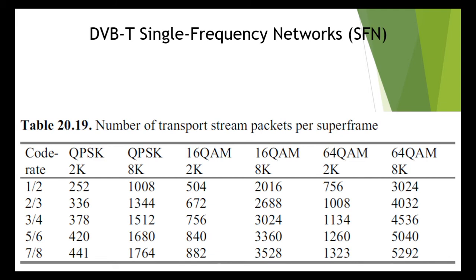In consequence, a super frame in a single frequency network must be composed of absolutely identical transport stream packets, and each modulator in the SFN must generate and broadcast the super frame at the same time. These modulators must therefore be synchronized with one another, and in addition, the differences in the feed line delays must be equalized both statically and dynamically.